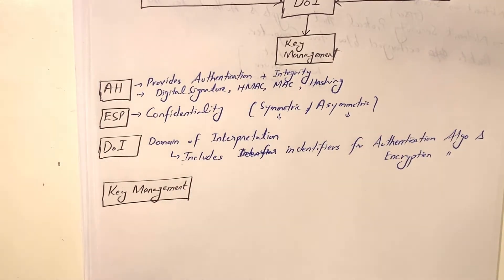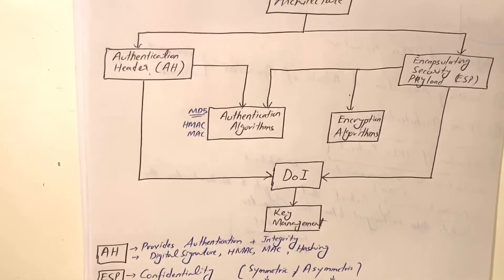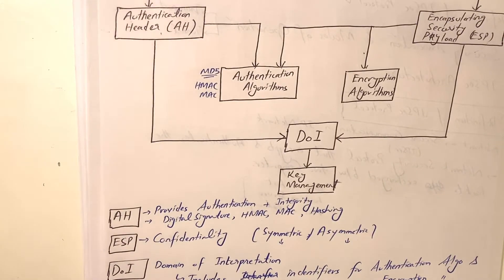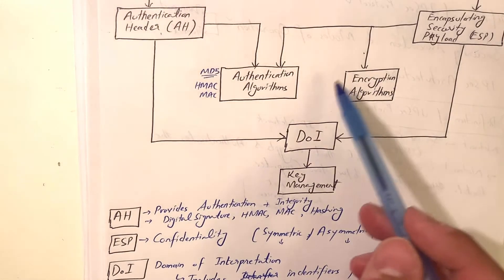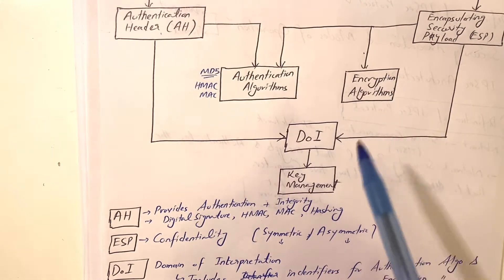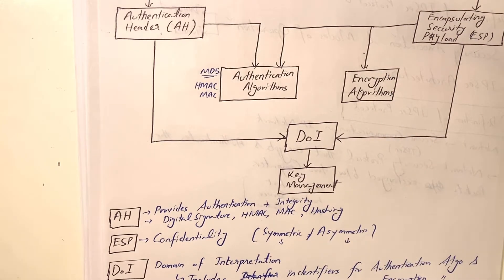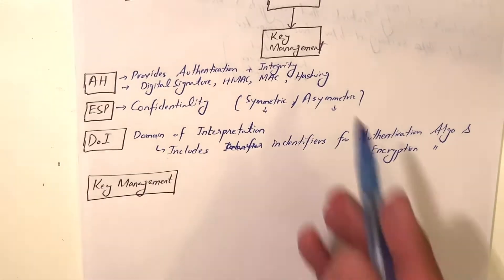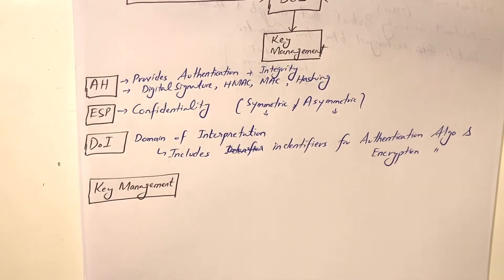The last and most important part is key management — how the key will be managed between a source and destination, between two computers. If you're using symmetric encryption algorithms, both sender and receiver use the same private key. If using asymmetric encryption, the public key and private key concept will be managed by the key management scheme.